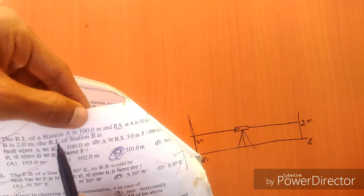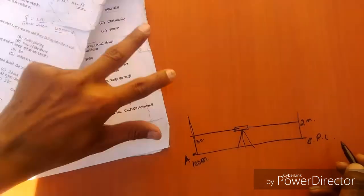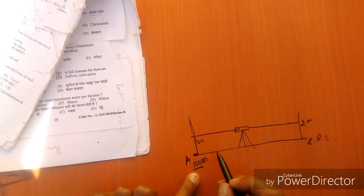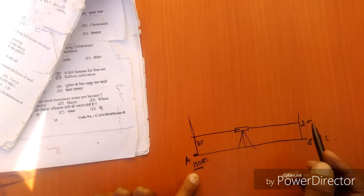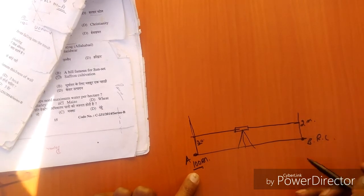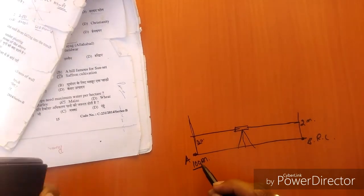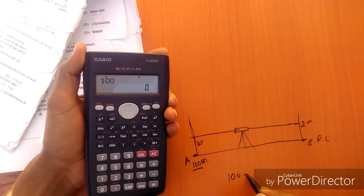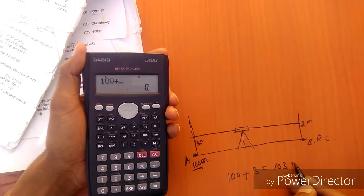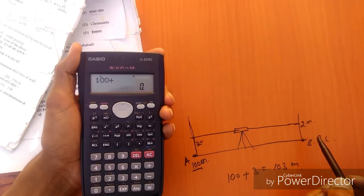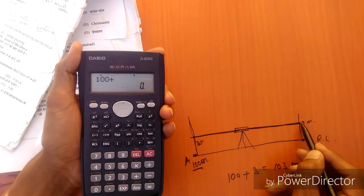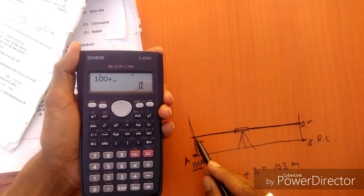The RL of station B - Point A has RL of 100 meters, and backsight reading is 3 meters. First, starting at point A, that is 100 meters plus 3 meters, that is 103 meters. This is the height of instrument. Now backsight minus foresight: 103 minus 2.